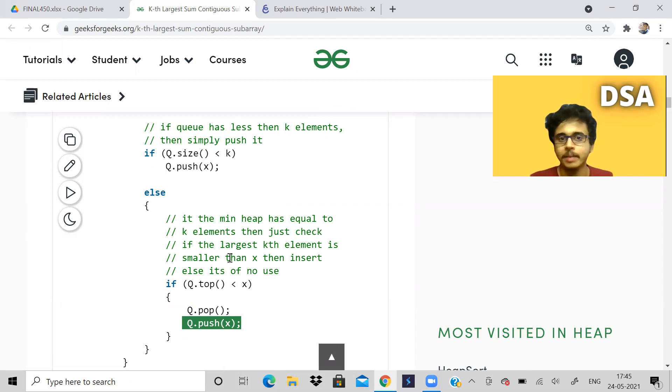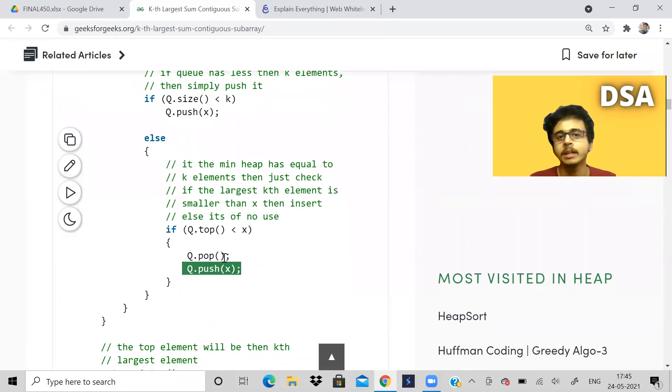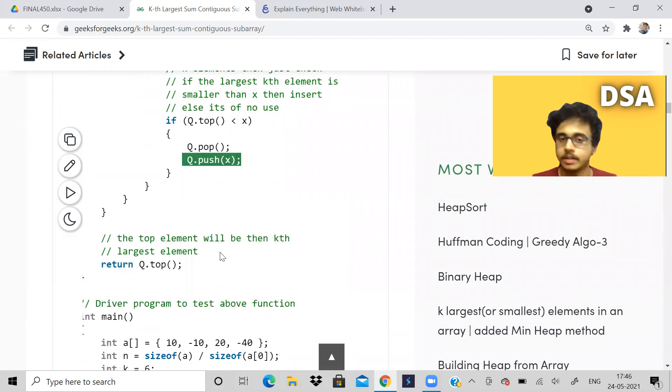You can't use max heap, actually. You should use min heap because then only you will be able to get the top element as the kth largest, which is what we want to find. If you use max heap, you will get the wrong answer.